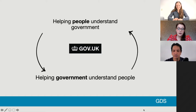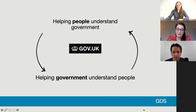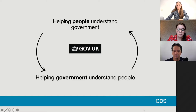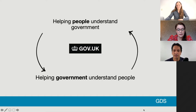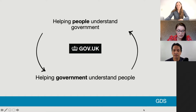Gov.uk serves a dual role. We help people understand government by making content simple and user journeys intuitive, removing the need for people to know how government works. We help users to self-serve, which helps government avoid costly contacts and casework. We also help government understand people — Gov.uk serves millions of users every day, giving us and departments incredibly valuable insights on what people need and how we can better serve their needs.